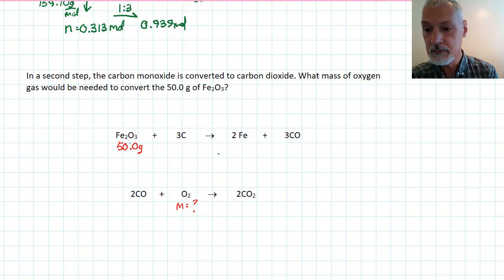Again, I start by making sure my equations are balanced. I'm going to take the given information, convert it into moles, which we've already done. So, that's 0.313. Now, to make my way over to oxygen, it's going to require two steps. I take a look, and I see that carbon monoxide is common to both of my equations. So, if I can determine the moles of carbon monoxide produced, I can use that number down in this equation.